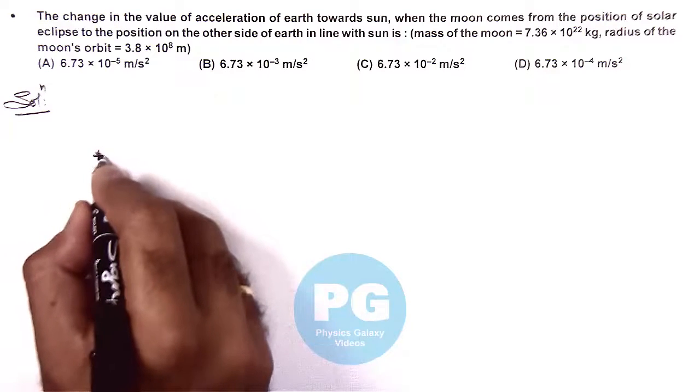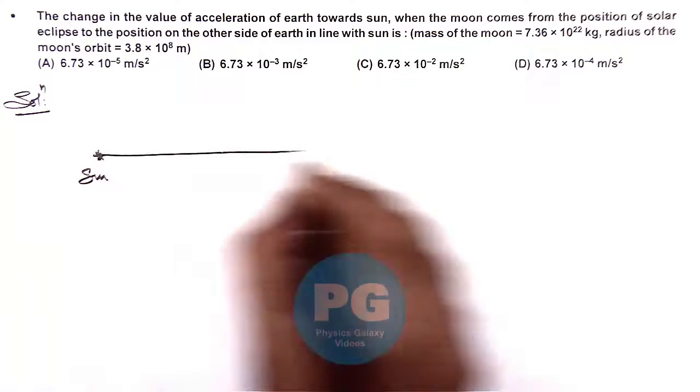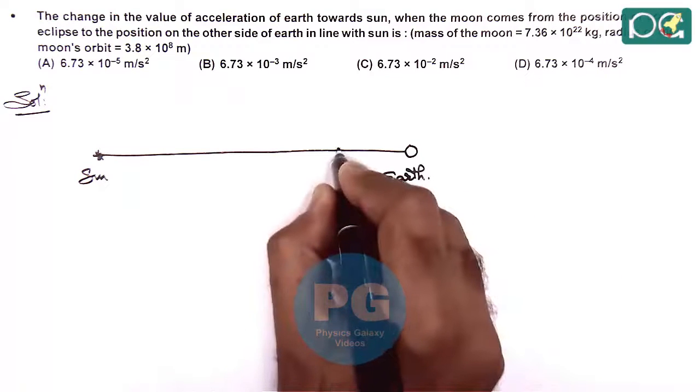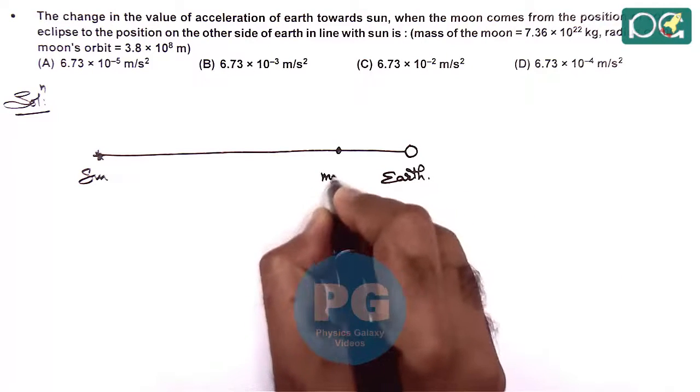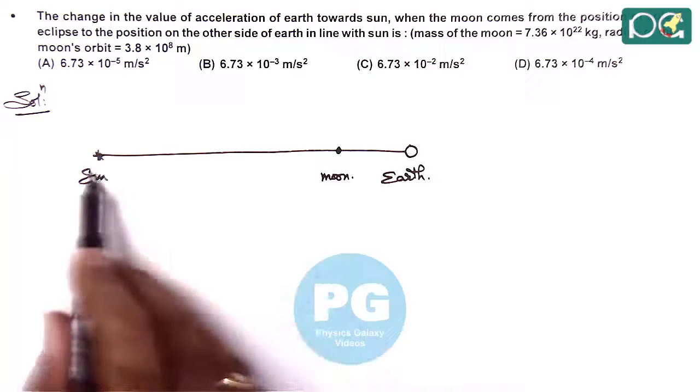So we can consider if this is the location of sun, and at a far away distance this is earth. Initially the moon is located in the position of solar eclipse, that is it is between sun and earth.